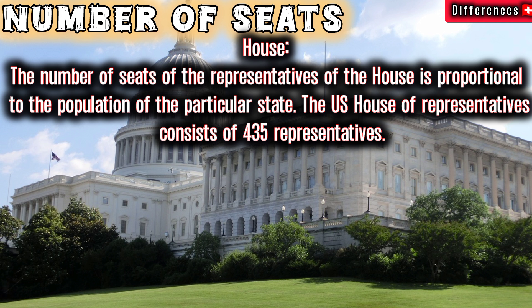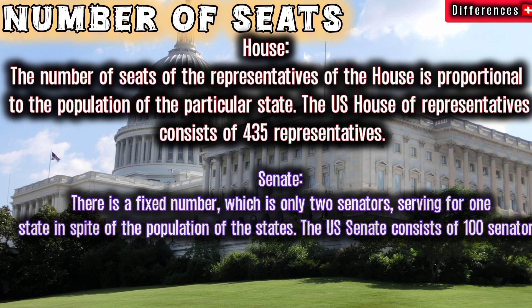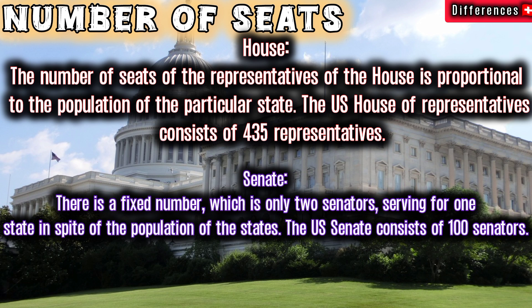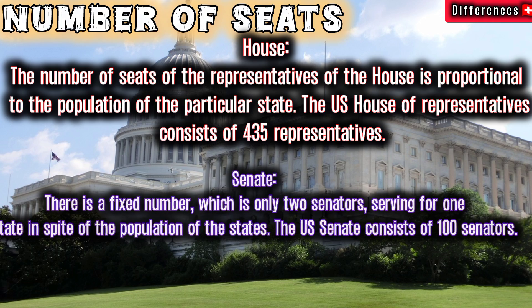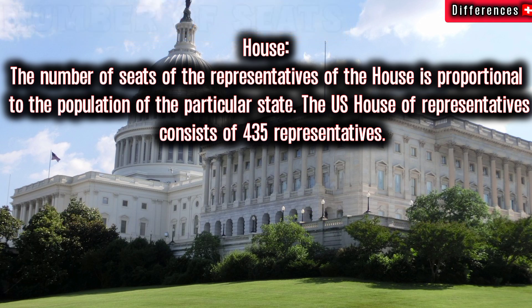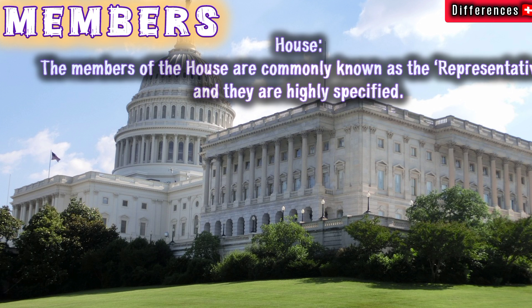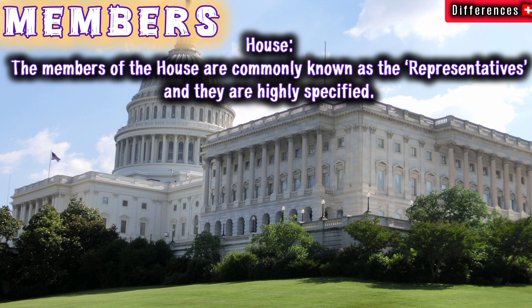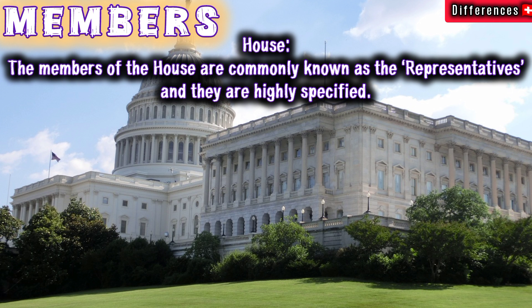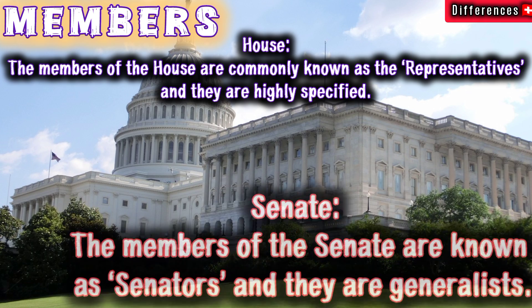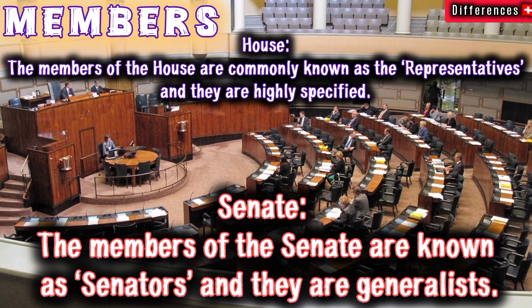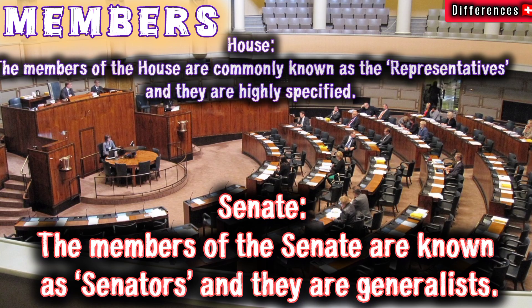The US House of Representatives consists of 435 representatives. In the Senate, there is a fixed number of only two senators per state regardless of population, giving the US Senate 100 senators total. Members of the House are commonly known as representatives and are highly specialized, while members of the Senate are known as senators and are generalists.